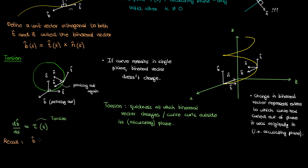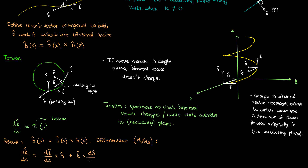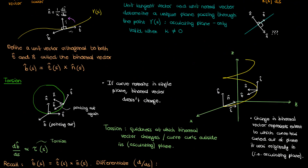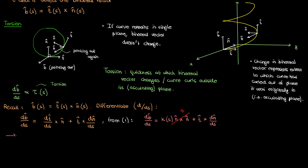To find that direction, let's revisit the binormal vector b = t × n. Taking the derivative with respect to s and applying the product rule for cross products, we get db/ds = (dt/ds) × n + t × (dn/ds). We know from equation 1 that dt/ds = kappa times n, so we can substitute that in. But the cross product of a vector with itself is zero, so the first term cancels out entirely, leaving us with db/ds = t × (dn/ds).